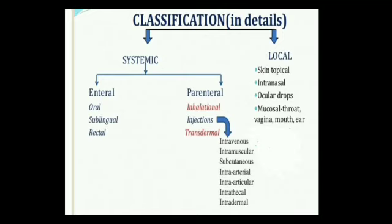Systemic is further classified into two groups: enteral and parenteral. In the systemic route, the poison or medicine goes directly into our circulation, which is why its harmful effect — or the beneficial effect of a drug — affects the entire body; the whole body is generally affected. In the local route, the effect is produced locally and does not enter the circulation. The enteral route — the word 'enteral' comes from 'intestine' — meaning the poison passes through the gastrointestinal tract. Enteral routes include: oral, sublingual, and rectal.